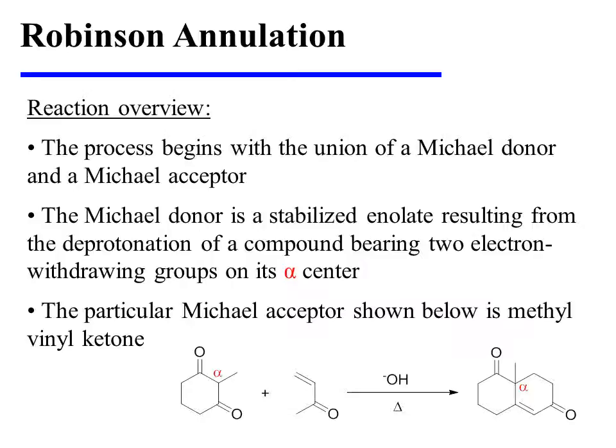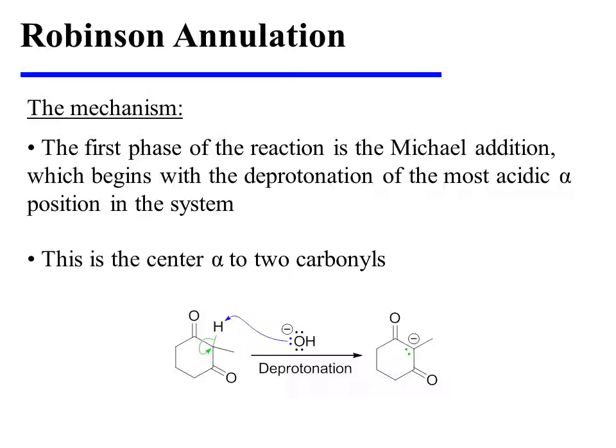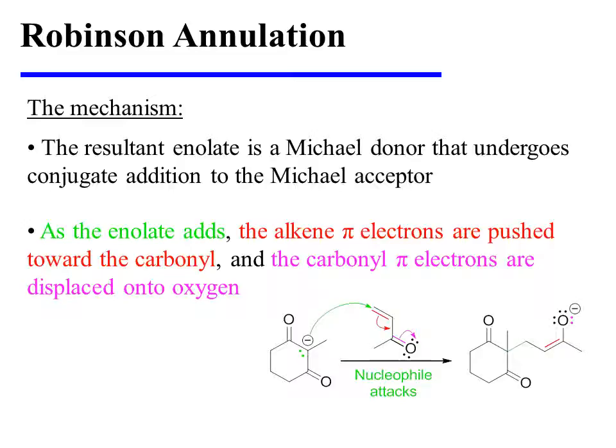The particular Michael acceptor shown in this reaction is methyl vinyl ketone. The first phase of the reaction is the Michael addition, and it begins with the deprotonation of the most acidic alpha position in the system — the center that is alpha to two carbonyls. The resultant enolate is stabilized by resonance delocalization into those two carbonyls and is therefore a suitable Michael donor that undergoes conjugate addition to the Michael acceptor.